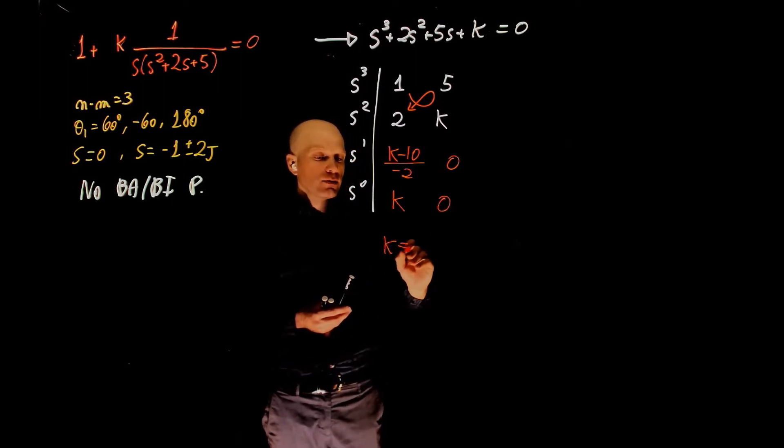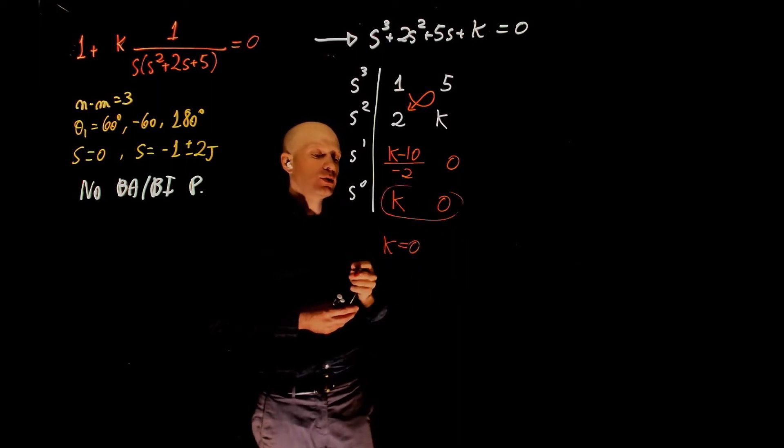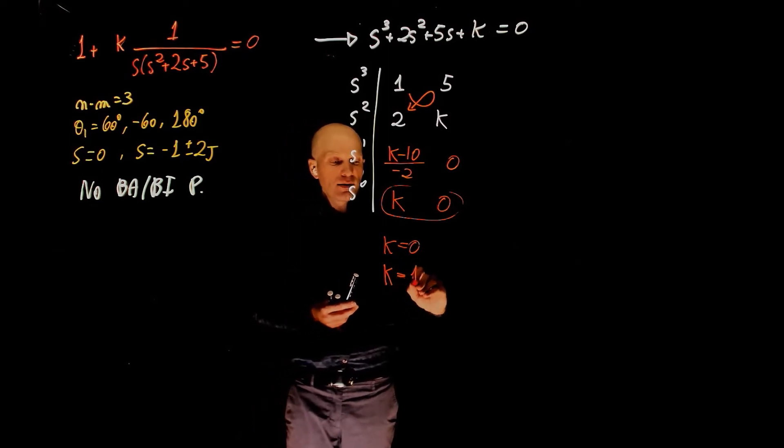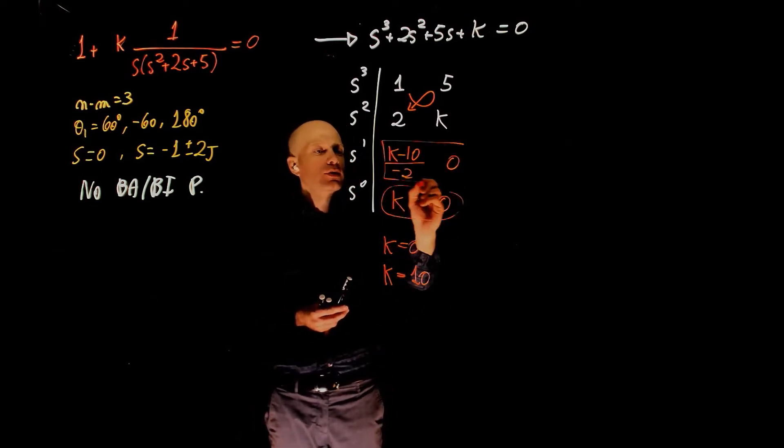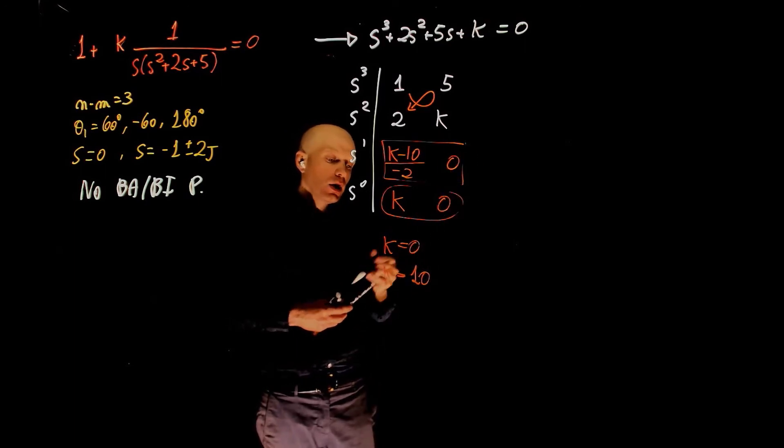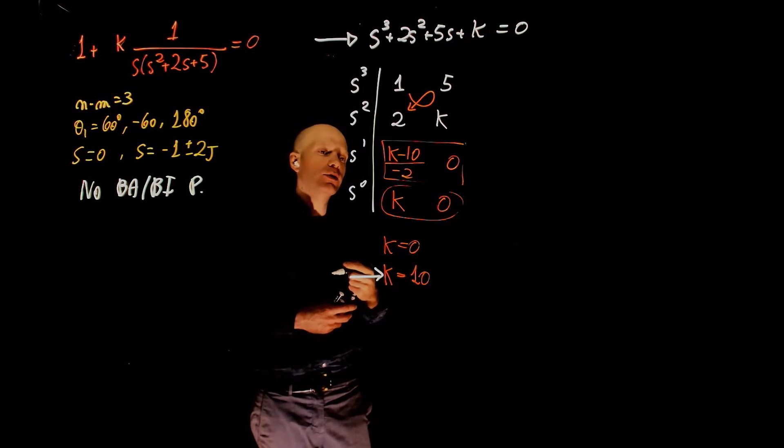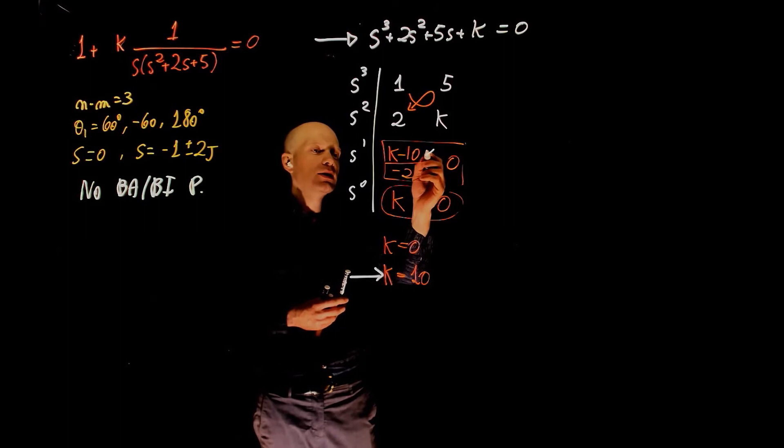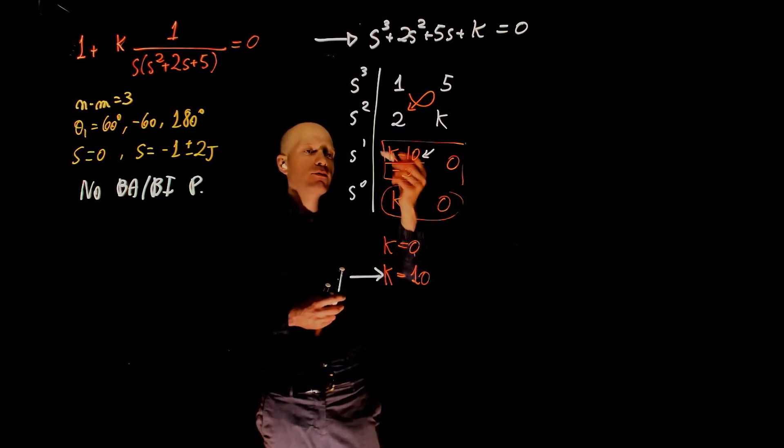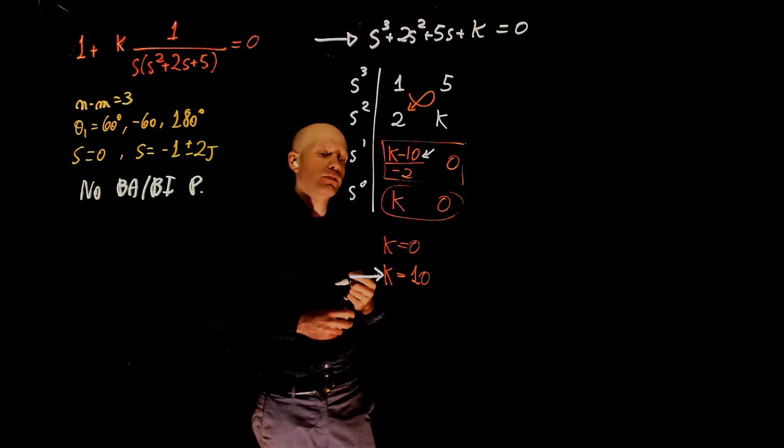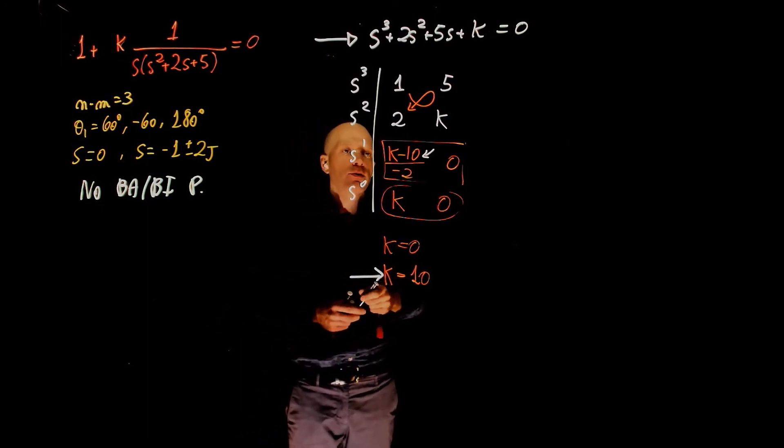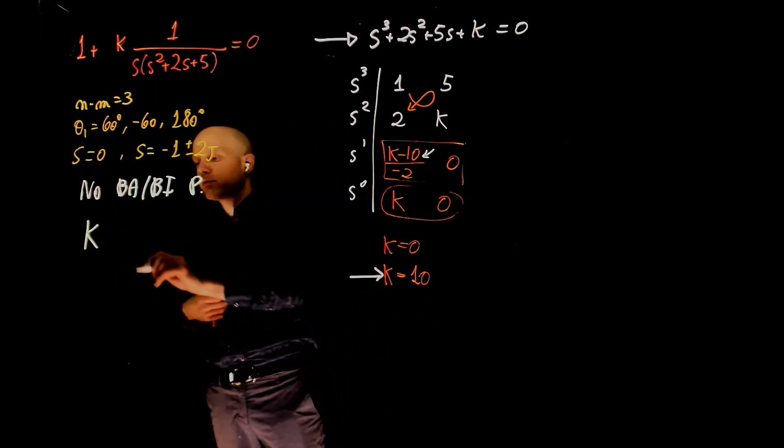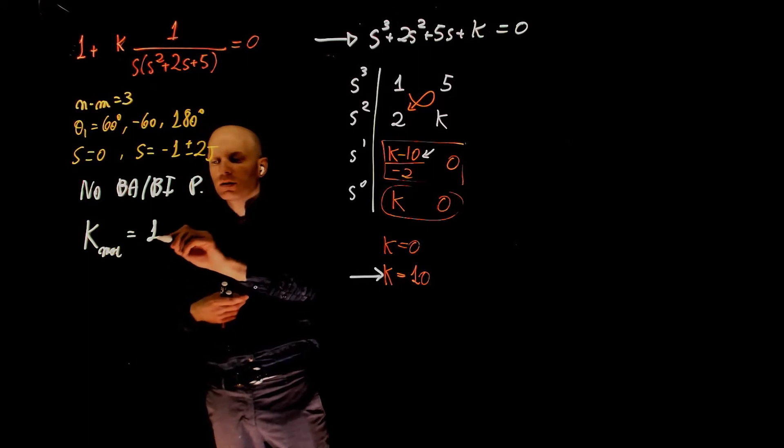So if k is 0, we have a row of 0s, and if k is 10, we have another row of 0s here. This now characterizes the maximum gain before the system becomes unstable. Anything greater than 10 will give us a negative value here, and we have 1 sign change, 2 unstable roots. So k equals 10 is the maximum value of k before instability. K max is 10.